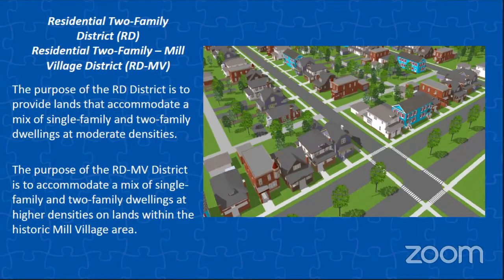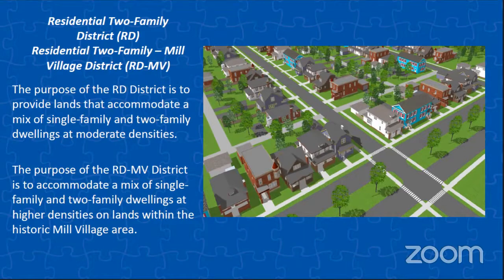Our two family districts: the base RD district provides lands that accommodate a mix of single family and two family dwellings at moderate densities. We then have our residential two family middle village district, which is specific to the historic mill village area and again it accommodates a mix of single family and two family dwellings at higher densities.